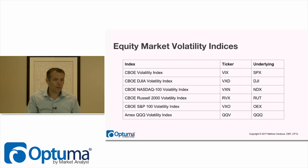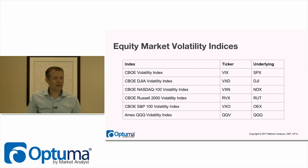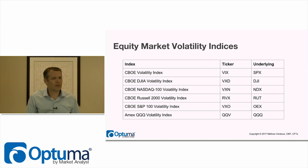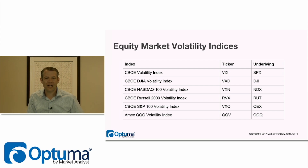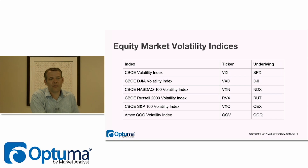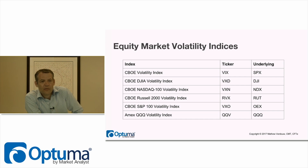There's a table of equity market volatility indices to be aware of, particularly for CMT2. The VXD tracks the Dow Jones, VXN tracks the NASDAQ, RVX tracks the Russell 2000, VXO tracks the S&P 100, and QQV tracks the Amex Q's index.